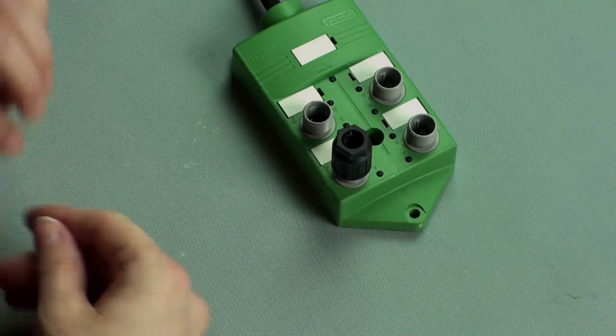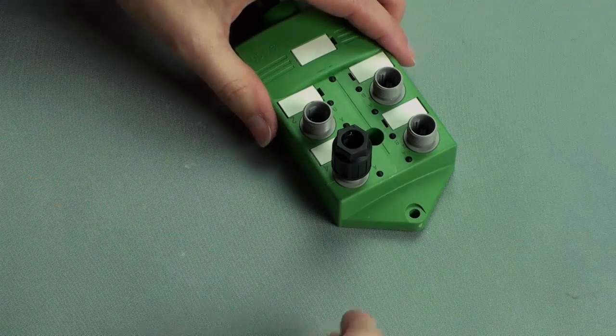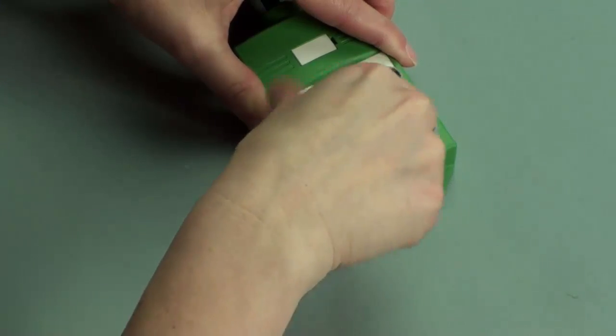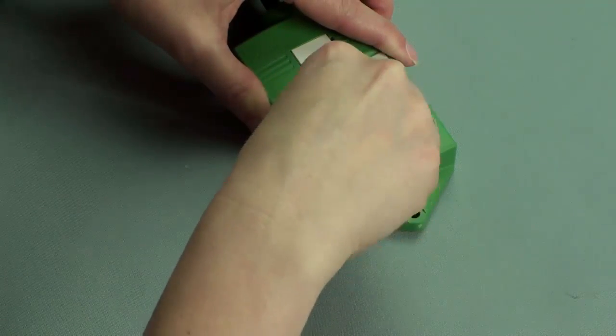You don't need any special tools, so let me show you how easy it is to use. Let's take a look at the assembly process. First, you'll want to unscrew the connector from the junction box.